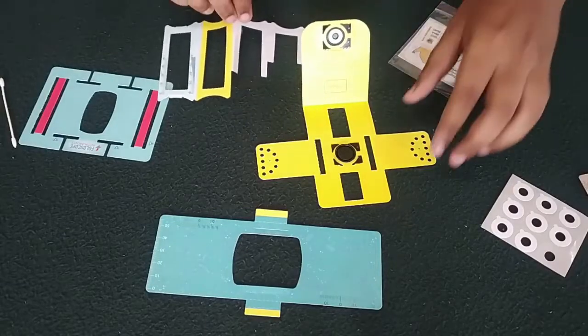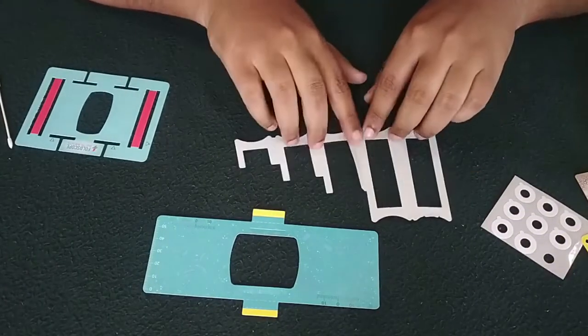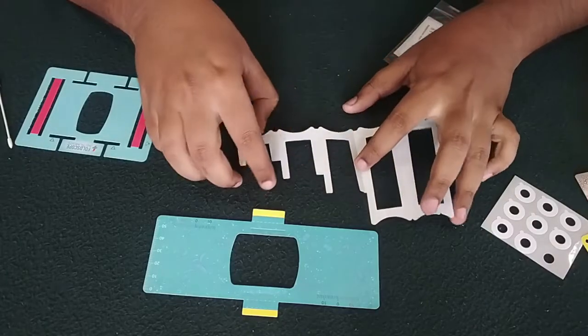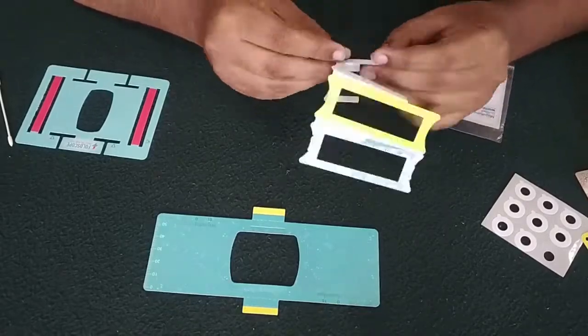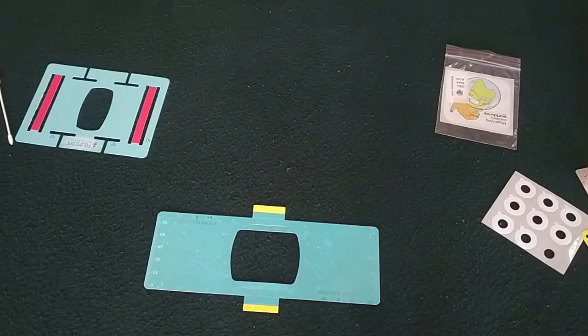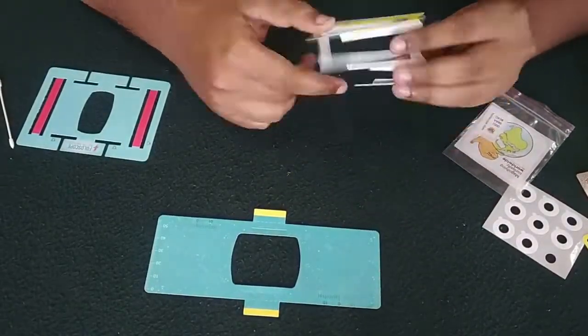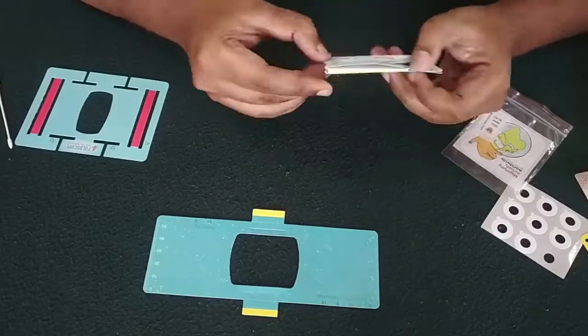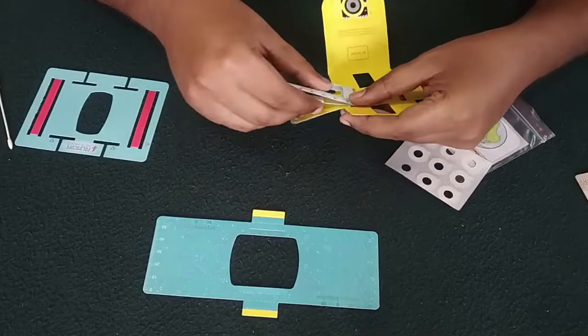Now taking this part, we just keep aside, keeping the grey side up, or we can say white side up. We need to fold the dotted lines. Now we need to insert this in this ramp.